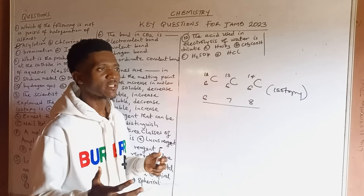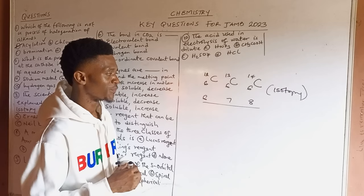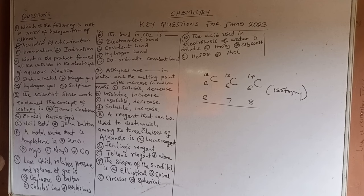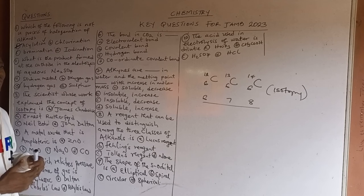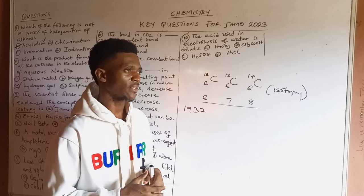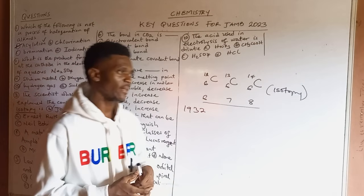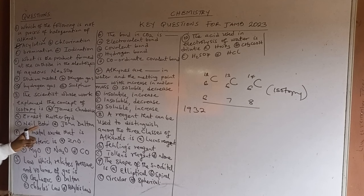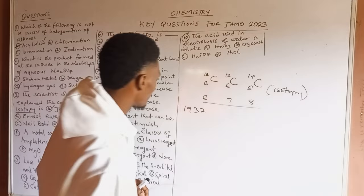The great contributor to isotopy is the person who discovered neutrons — James Chadwick. He discovered neutrons by bombarding beryllium sheets with alpha particles in 1932, concluding that neutrons are uncharged particles situated in the nucleus. Rutherford was the one who discovered protons. Both men worked extensively in atomic model development. The answer is A, James Chadwick.